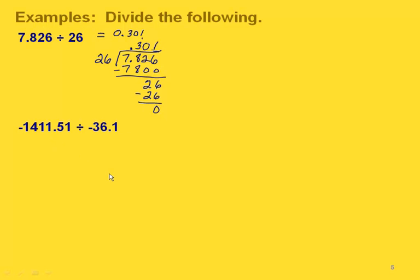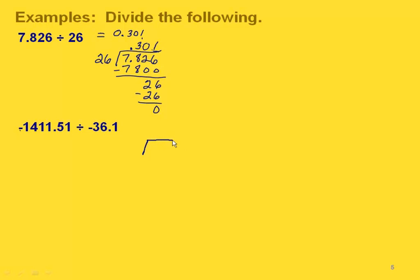In this next one we have some negative decimal numbers. Notice that we have two negatives, and remember when dividing, if you have two negatives then your quotient will be a positive number. So we can just forget about those negatives since we know our quotient will be positive.